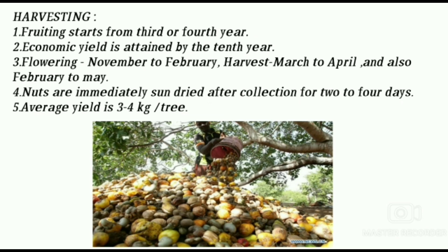Harvesting: fruiting starts from the 3rd or 4th year. Economic yield is attained by the 10th year. Flowering is from November to February. Harvest is from March to April, and also February to May. Nuts are immediately sun-dried after collection for 2 to 4 days. Average yield is 3 to 4 kg per tree.